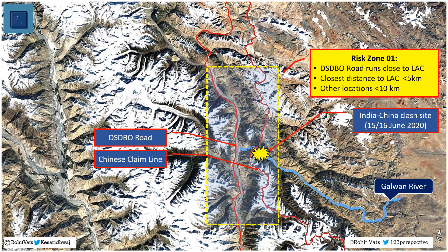However, this stretch of the DS-DBO road runs the risk of interdiction by the Chinese. The stretch of DS-DBO road from north of its confluence with the Changchenmo river to where it enters the Margo gorge runs very close to the LAC. At some places, the road is under 5 km from the Chinese claim line as it runs along the mountain ridges to the east of the road. The main reason we pushed the Chinese back into the Galwan river is because, had we permitted them to extend their claim line, the DS-DBO road would have come within their direct observation.